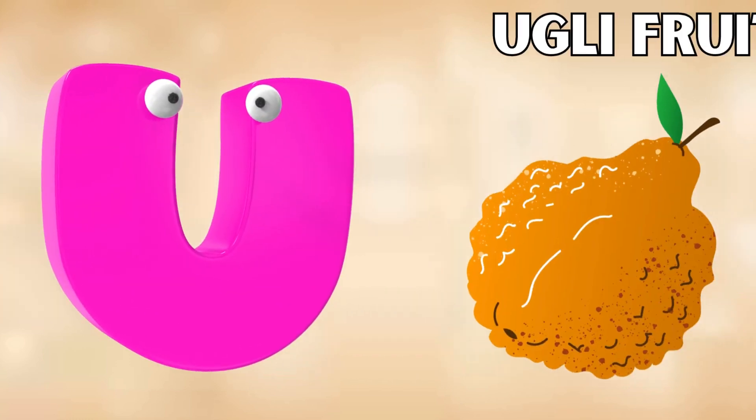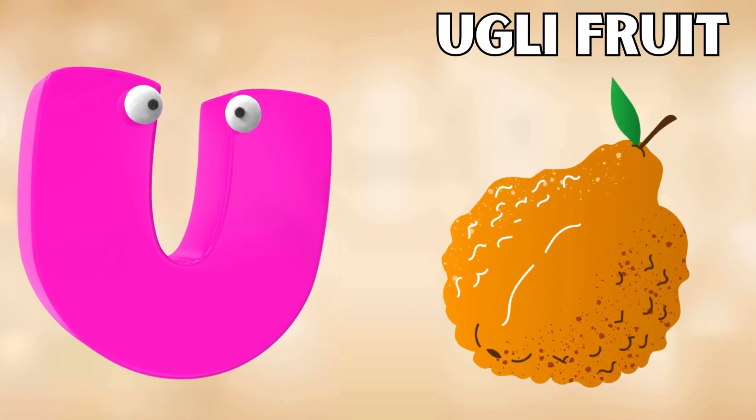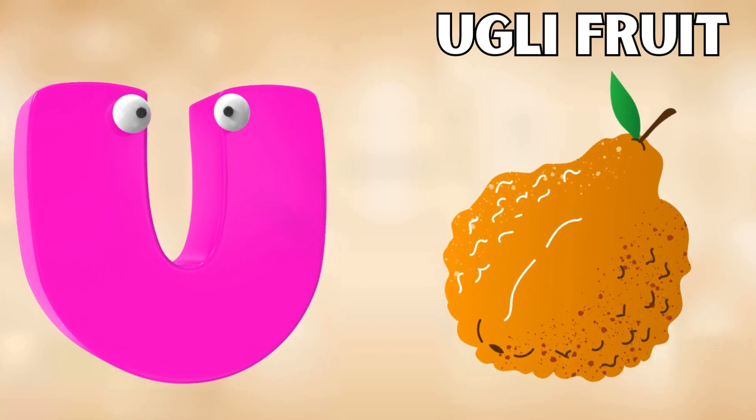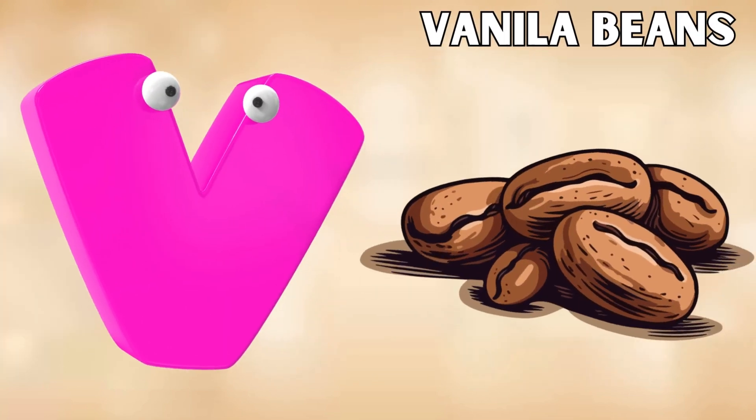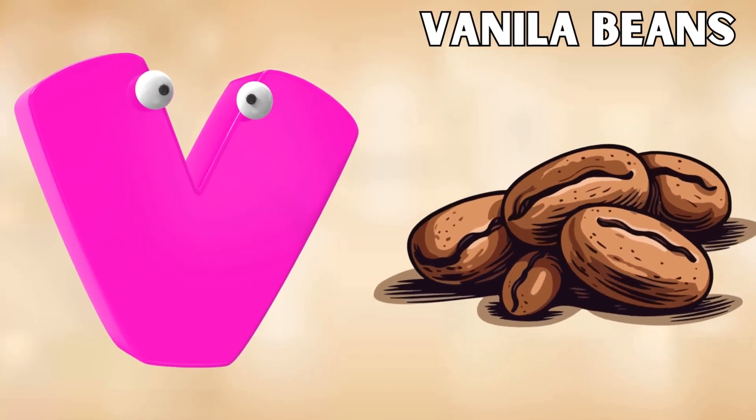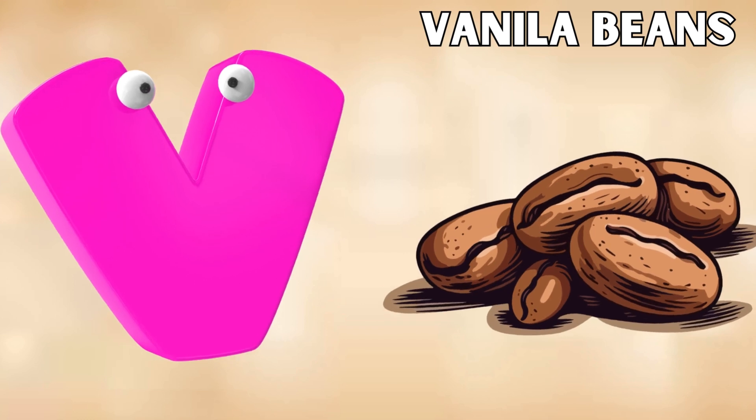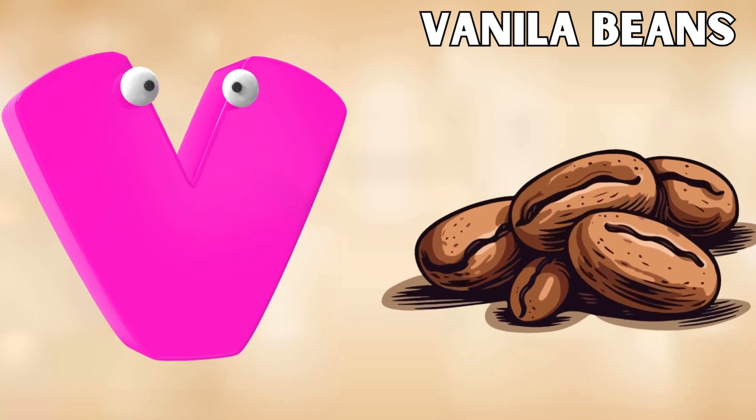U is for ugly fruit, u-u-uh-ugly fruit. V is for vanilla beans, v-v-v, vanilla beans.